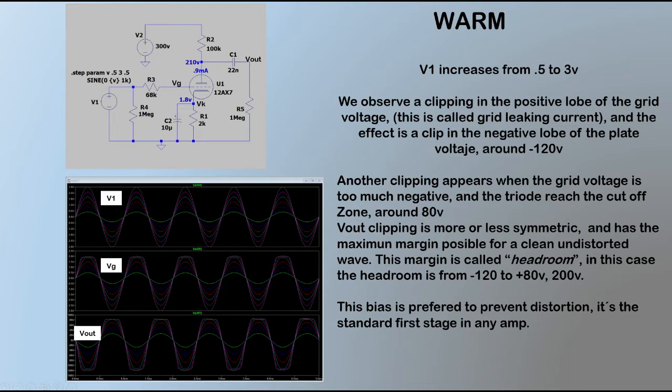If we want a big headroom for a clean guitar signal, this is the bias we have to choose. We can observe in the plate voltage that is Vout - the amplitude of the output signal is near 200 volts peak to peak, typically in a triode stage. This is the response for only five volts peak to peak in the grid signal. This gives us an idea of the voltage that a tube can handle.